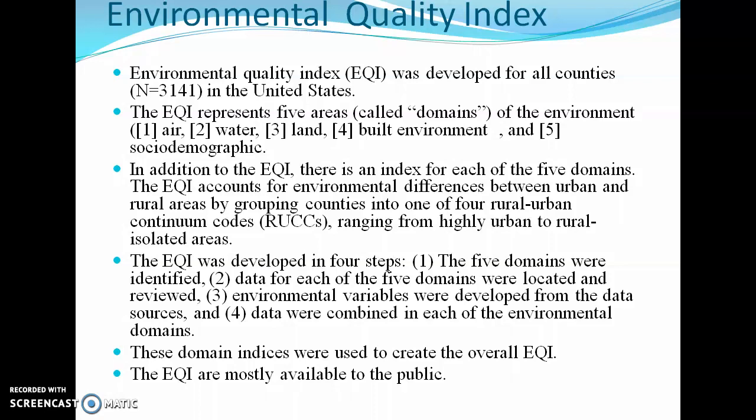Social demographic means it is a combination of social and demographic area. In addition to the EQI, there is an index for each of the five domains. The EQI accounts for environmental differences between urban and rural areas by grouping counties into one of four rural-urban continuum codes, that is called as RUCC, ranging from highly urban to rural isolated areas. These five domains are used to calculate EQI.